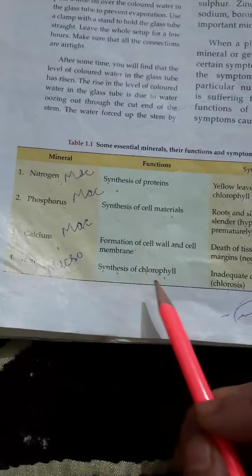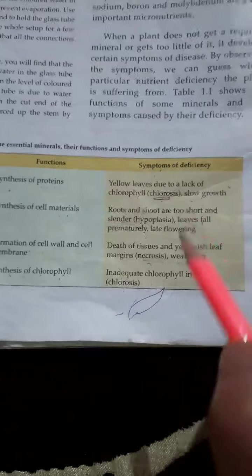Last one is iron, which is a micronutrient. It helps in the synthesis of chlorophyll. It also causes chlorosis like nitrogen because in this deficiency inadequate chlorophyll in leaves occurs.